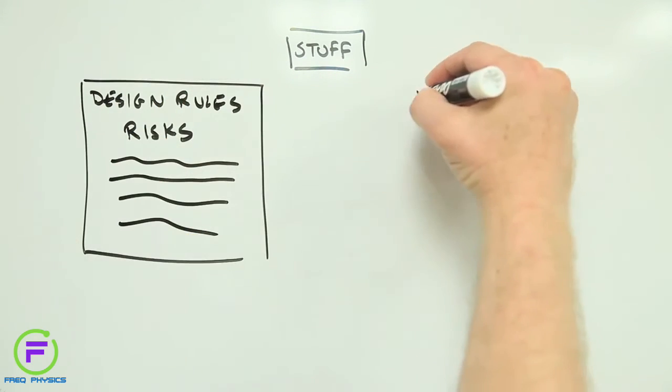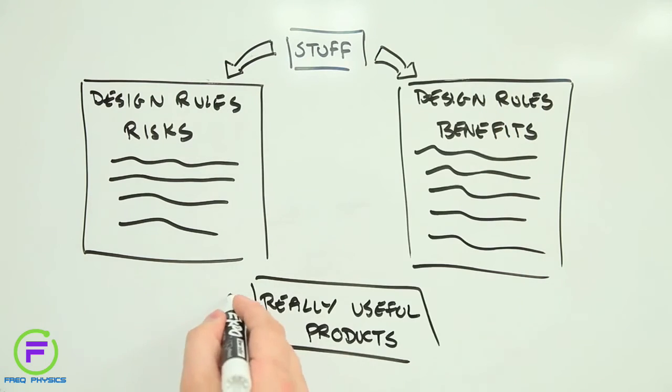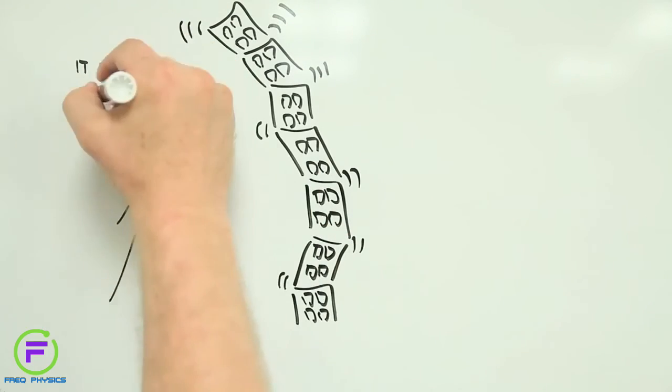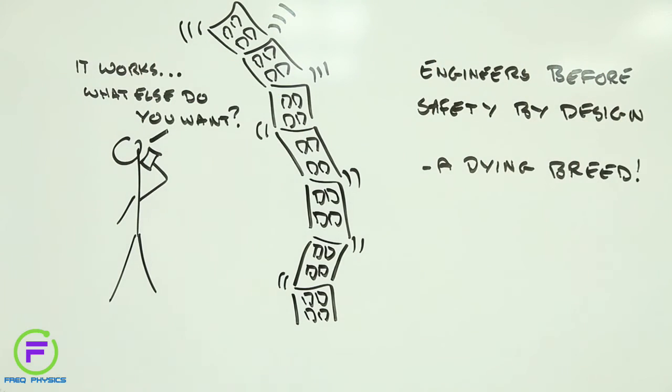In principle, if we know what makes something harmful, we can design it to be less harmful. We're already seeing this with synthetic chemicals, where scientists are designing substances that do what they're supposed to do, but are gentler on the environment and our bodies. And there's nothing to stop us doing the same thing with other materials. Because advanced materials depend on designing and engineering substances to behave in a certain way, it's a relatively small step to including safety parameters in the design process, as long as we know what makes something harmful and how to reduce it.